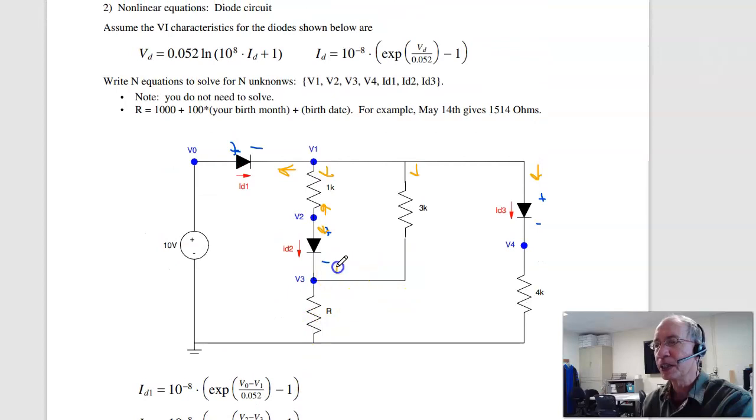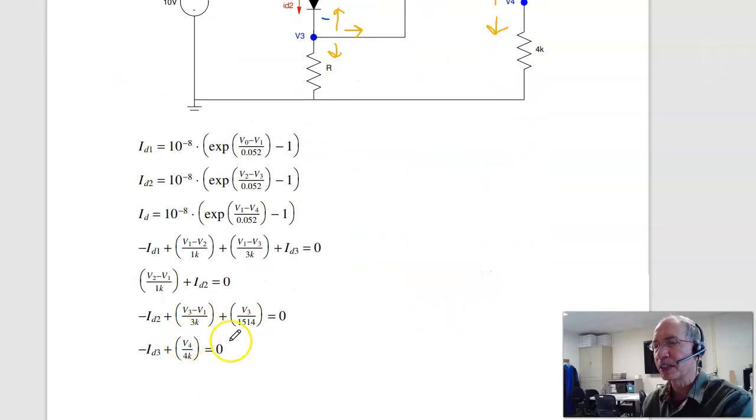Node three, current up, down, down, and right equals zero. That's minus ID2, plus V3 over R, plus V3 minus V1 over 3k. And at node four, current up plus current down equals zero. Minus ID3 plus V4 over 4k equals zero. Seven equations, seven unknowns.